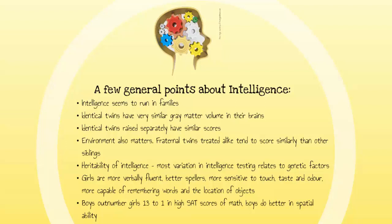With regards to gender, girls are generally more verbally fluent, better spellers, more sensitive to touch, taste, and odor, and more capable of remembering words and the location of objects. Boys tend to outnumber girls 13 to 1 in high SAT math scores, and boys do better in spatial ability. But among high school underachievers, boys outnumber girls 2 to 1. These points come from Myers' textbook — but be careful not to stereotype.